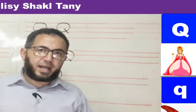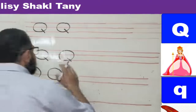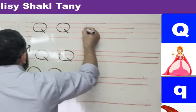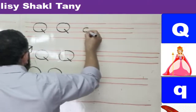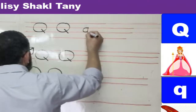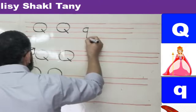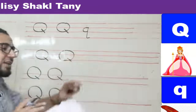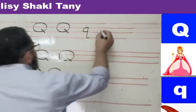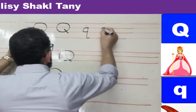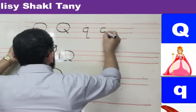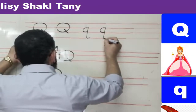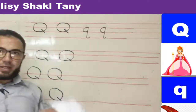Now let's write lowercase q on the lines. On four lines, start from the second line, make a curved line — like a C — touching both the second and third lines, then bring a straight line down to the fourth line, and add a small tail at the end. Tell the child: the curved line must touch both lines, then a straight line going down under the lines with a small tail.